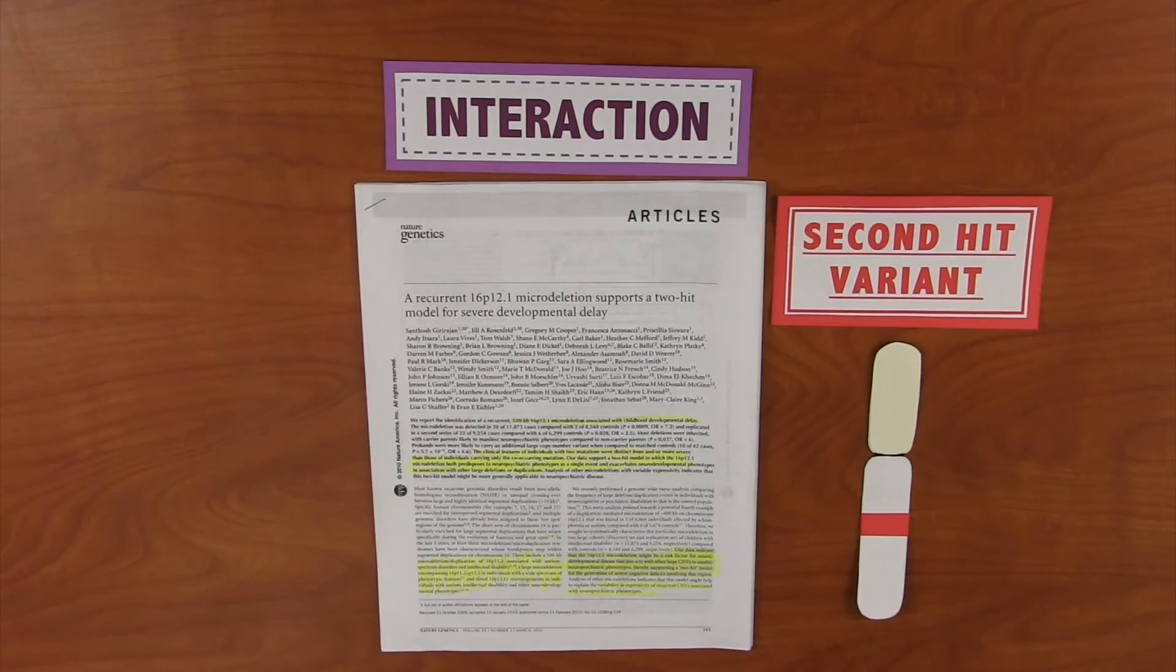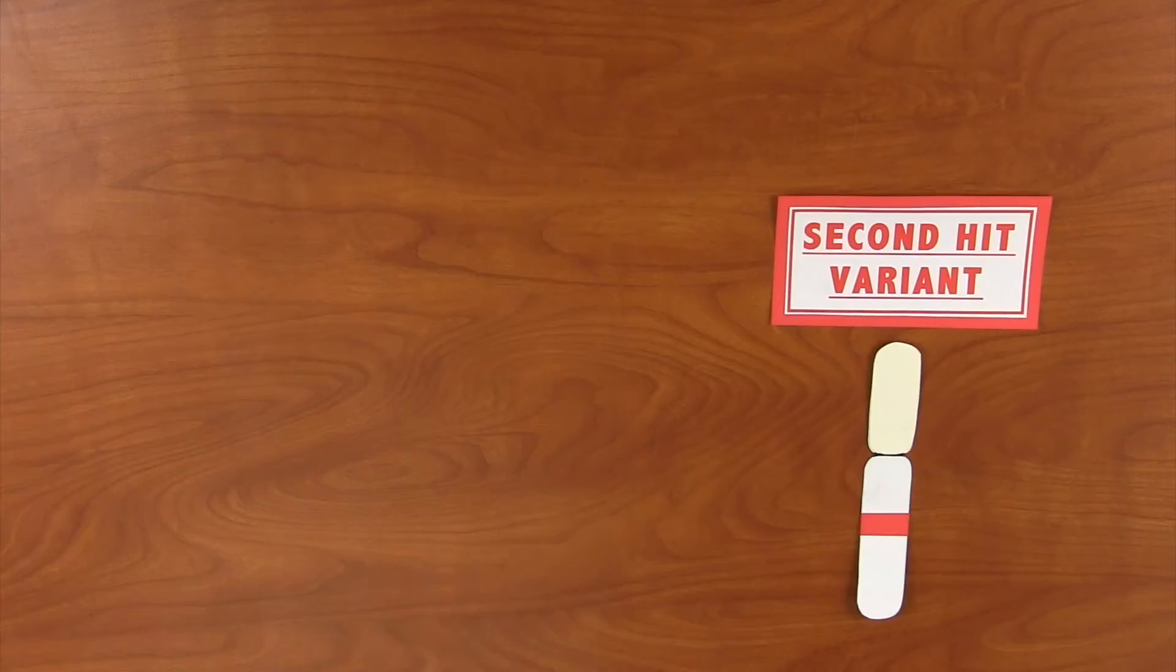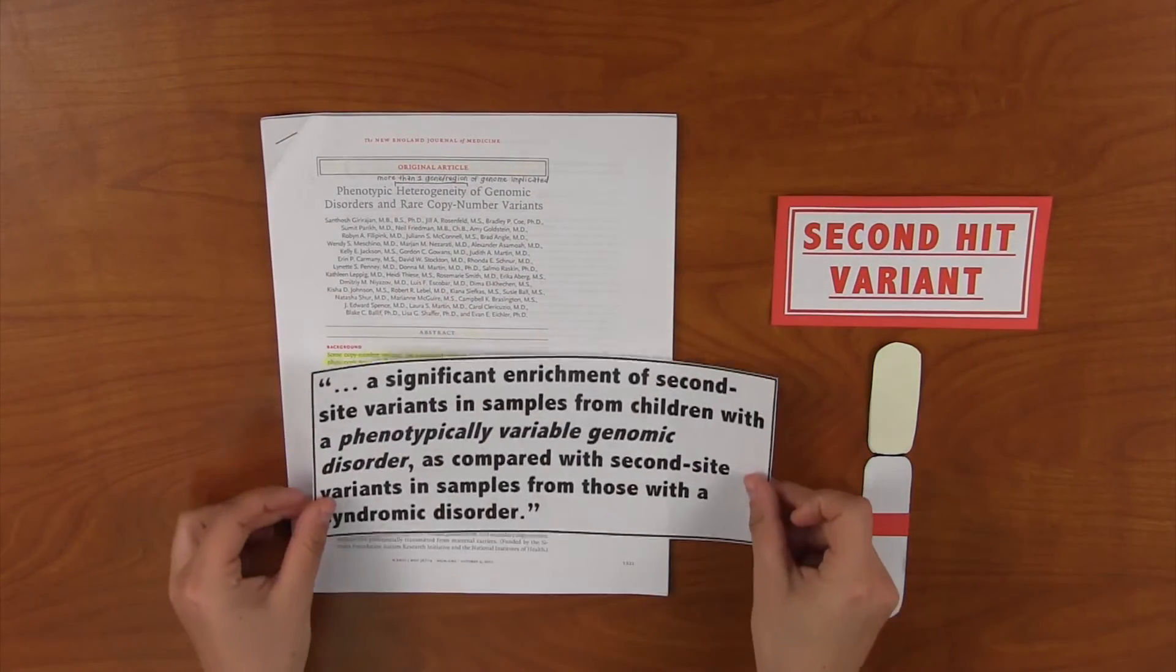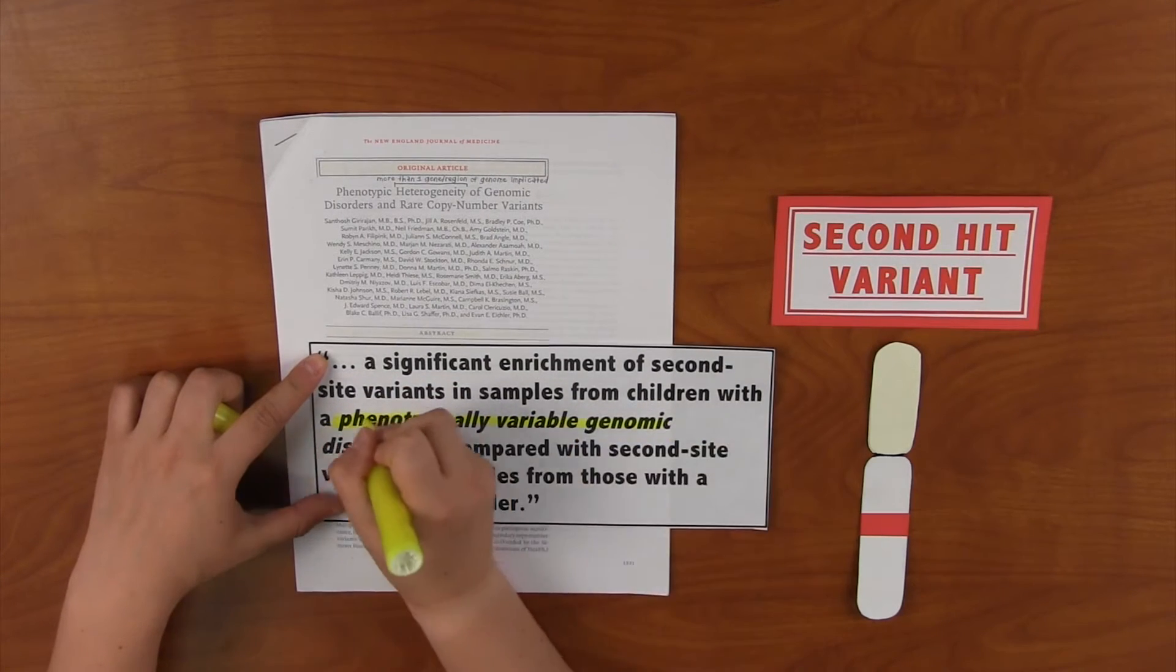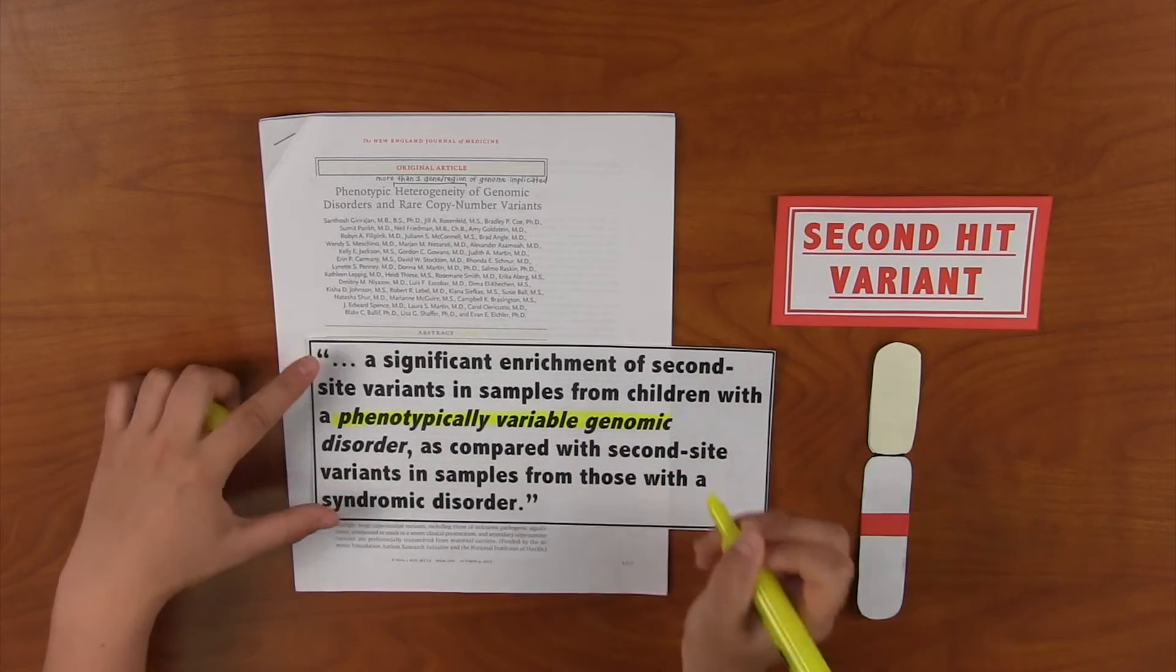In another paper, we reported that there is a large statistical increase of second hits seen in diseases with larger clinical variability, like this deletion, than those that are considered syndromic, for example, like Smith-McGinnis syndrome.